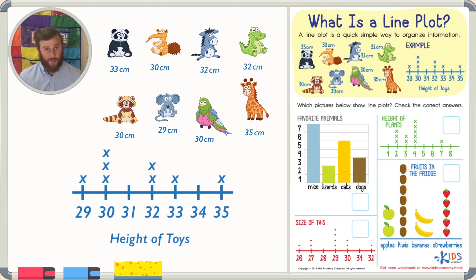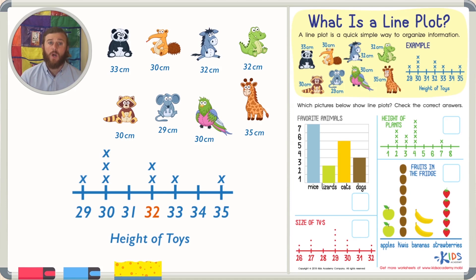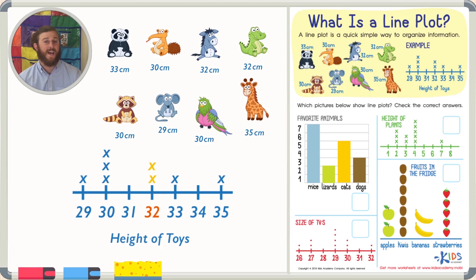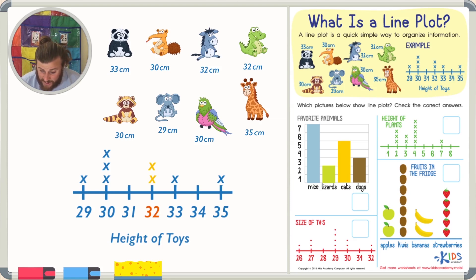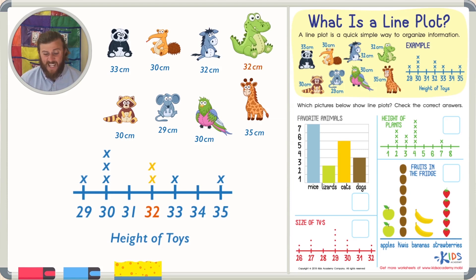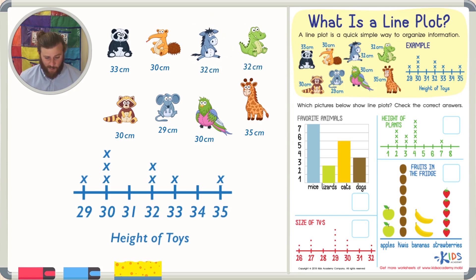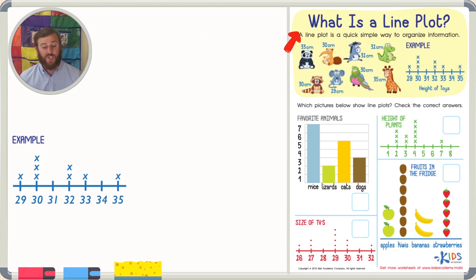How many animals are 32 centimeters tall? Let's go to 32 centimeters and see — there are two X's, so there are two stuffed animals that are 32 centimeters tall. Looking at the picture, we can see that the alligator is 32 centimeters tall and so is the donkey.